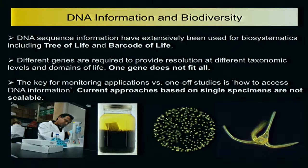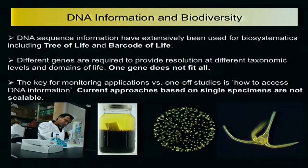In wrapping up this part: DNA has been used extensively for biosystematics and biodiversity analysis. Projects like Tree of Life or Barcode of Life are good examples. We've learned that different genes are required to provide resolution at different taxonomic levels, and that for different domains of life, we need more than one gene — we need different genes. So one gene doesn't fit all, and we can't just go with one marker.